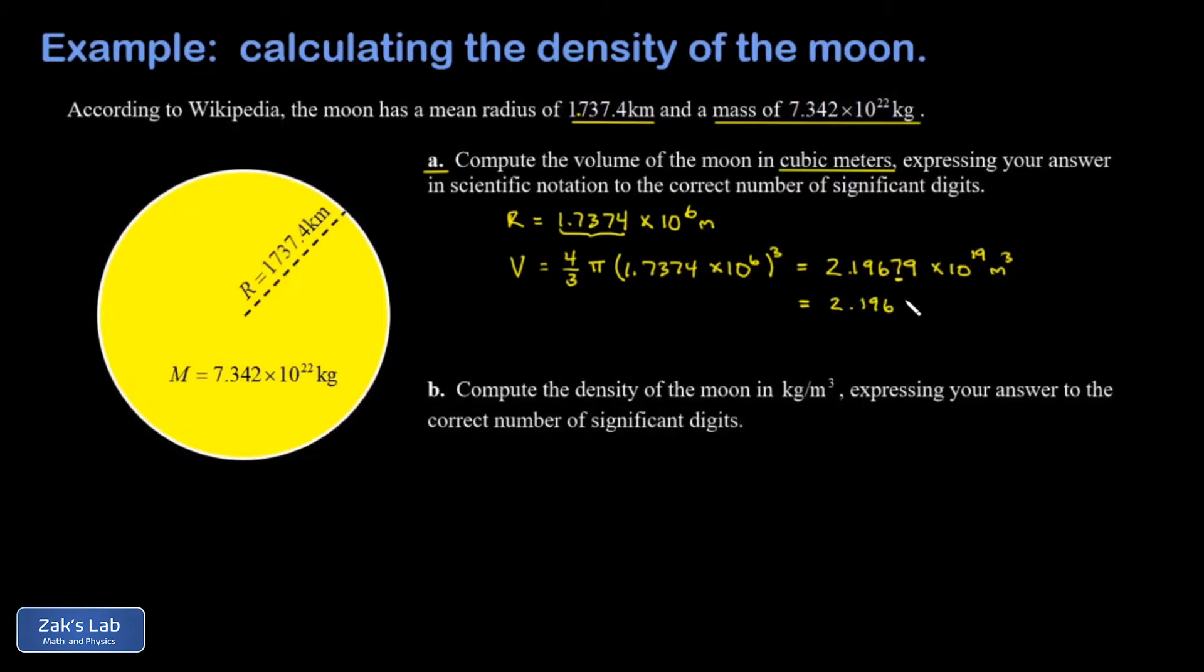In part B, we're asked to compute the density of the moon. Density is mass divided by volume, measured in kilograms per cubic meter. We were given the mass to four significant digits, and again I'll state a bunch of extra precision just so I can illustrate how the rounding works.